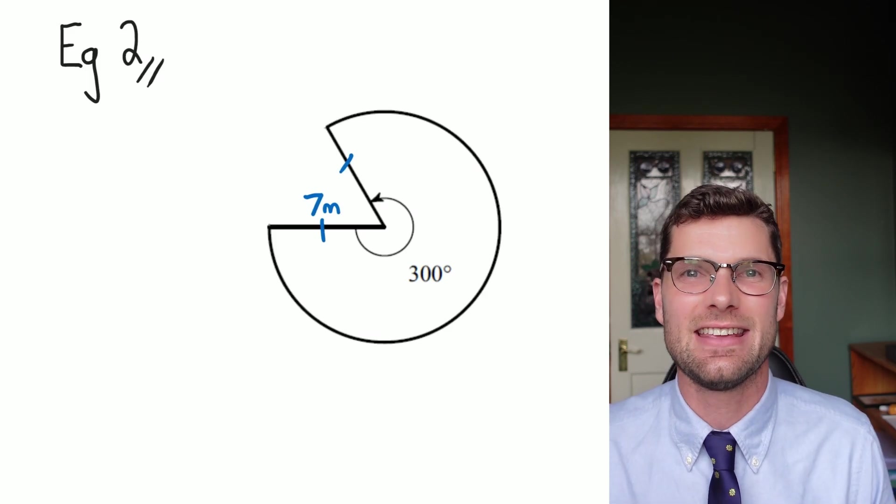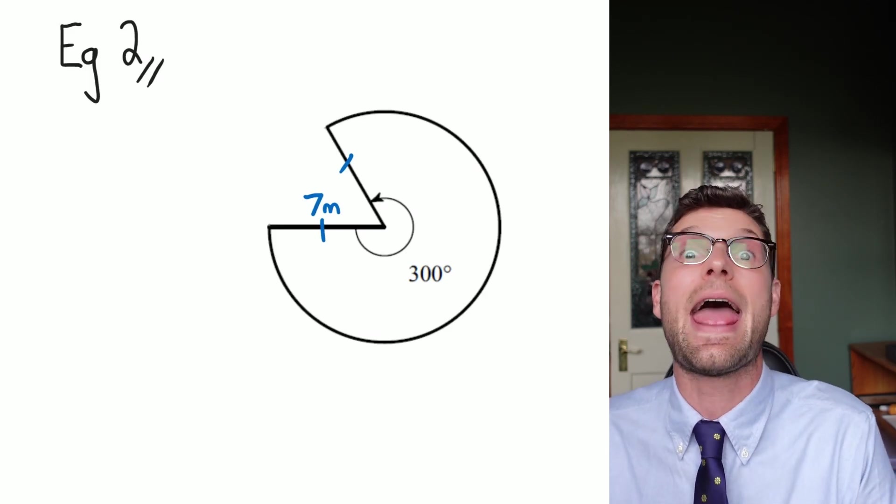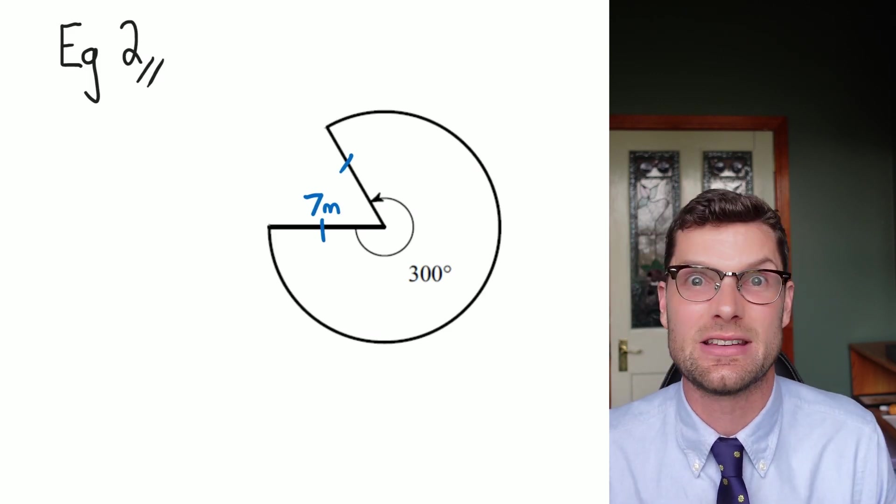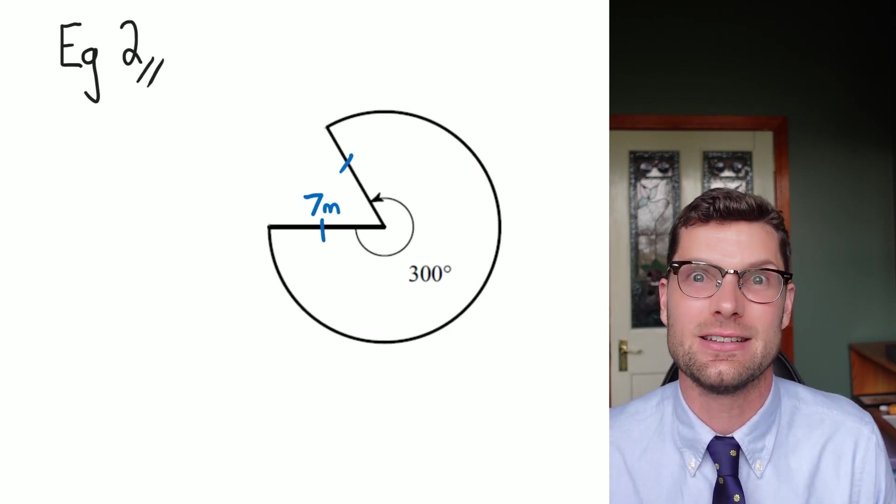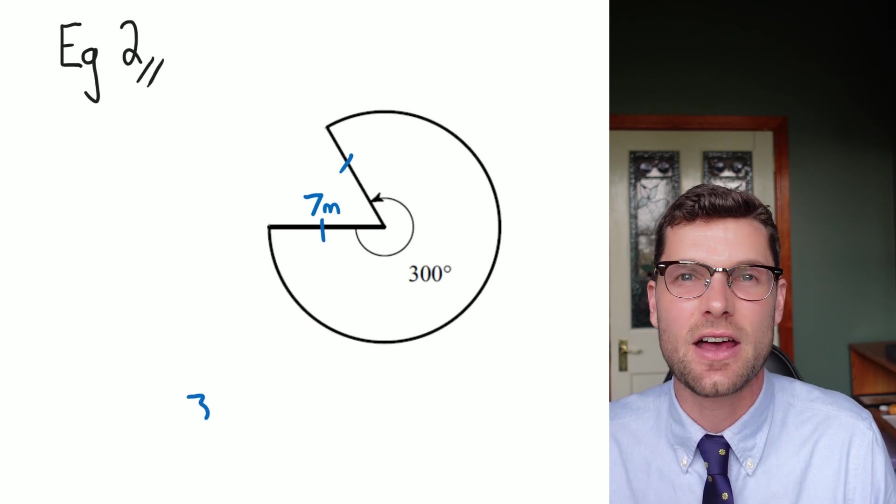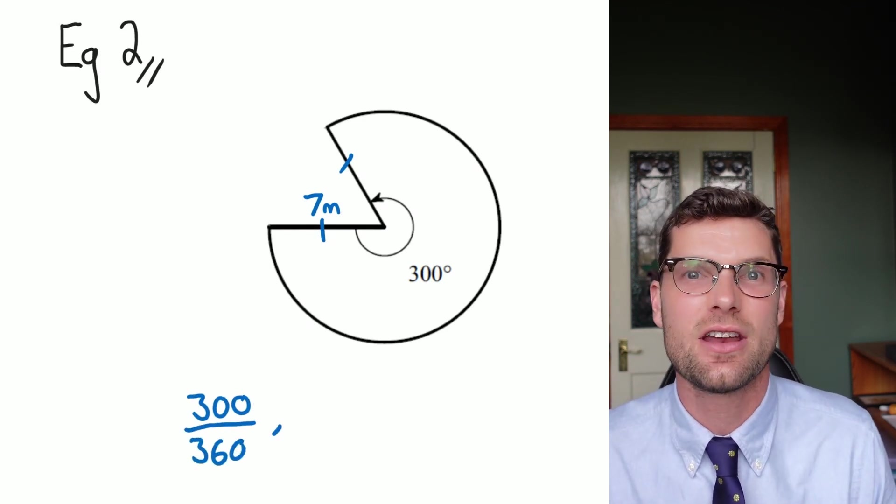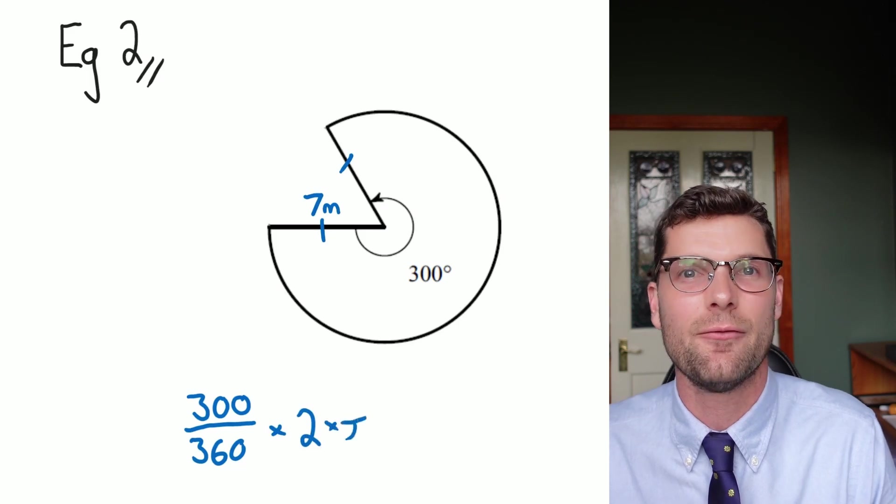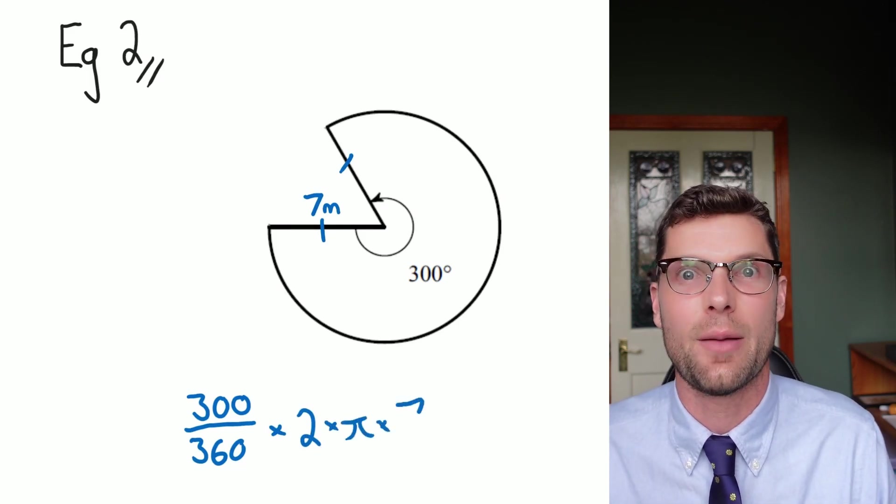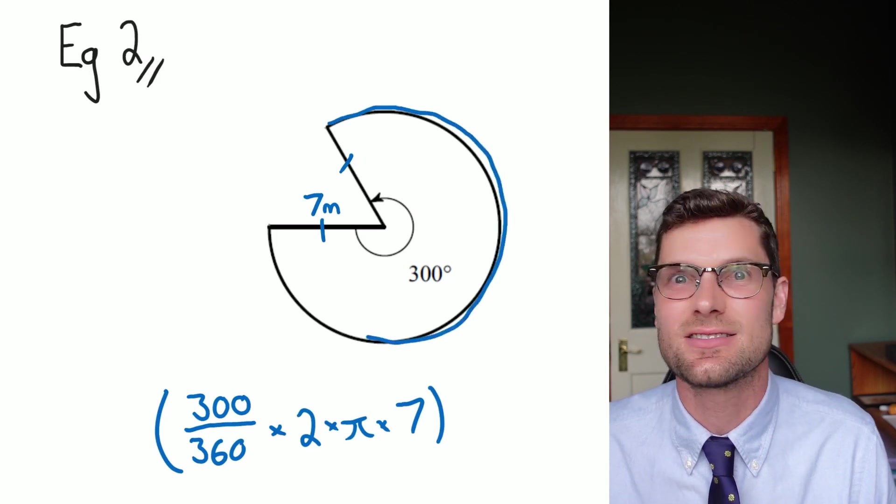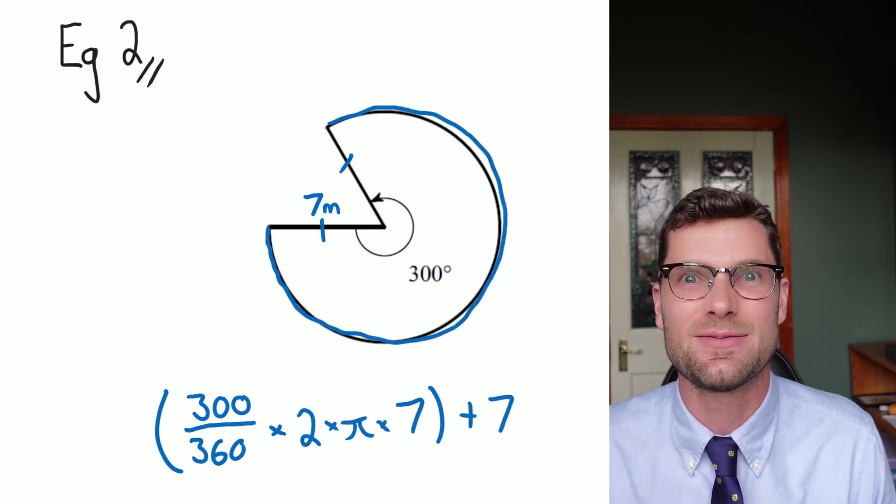That doesn't change anything. We've got 300 out of a total 360 degrees of this circle, so a little bit to cut out, and I know that the radius is equal to 7. So because I've got 300 over 360, that's the start of my equation, and then I multiply that by the circumference, or 2π multiplied by 7. Finally, I do still have to add on those two sevens, so 7 plus 7, and that's my final answer.